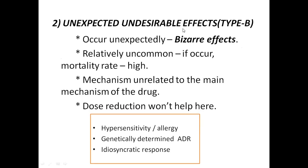Type B — bizarre effects — occur unexpectedly. We cannot expect this kind of side effect. It is relatively uncommon, but if it occurs its mortality rate is high. The mechanism is unrelated to the main mechanism of the drug. Under Type B, there are three categories: hypersensitivity or allergy, genetically determined ADR, and idiosyncratic responses.